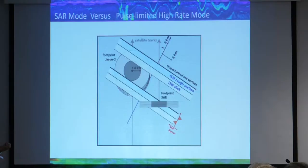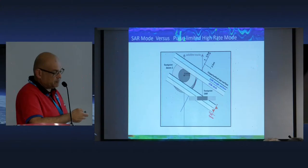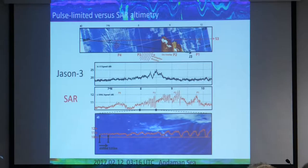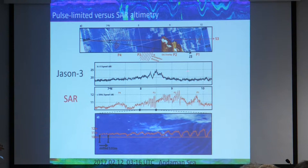The conventional altimeter is sensitive to internal solitons, but not as sensitive as we expect the SAR mode to be. Here's what we see — the difference between a Sentinel-3 track and a Jason-3 track: the Jason-3 sigma-naught in Ku band versus the same for the SAR mode. With the SAR mode, we nicely capture the internal solitons, while the conventional altimeter produces a signature but it's obviously not as detailed.